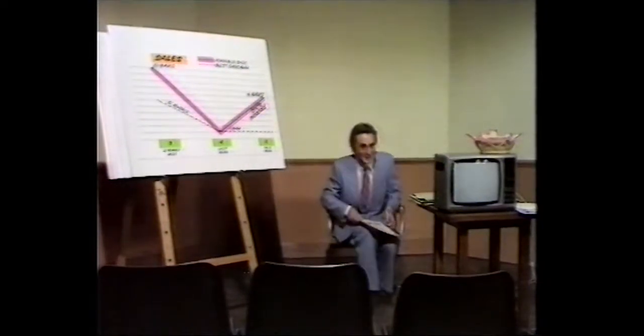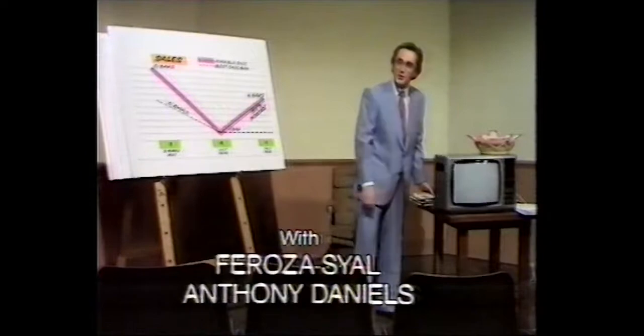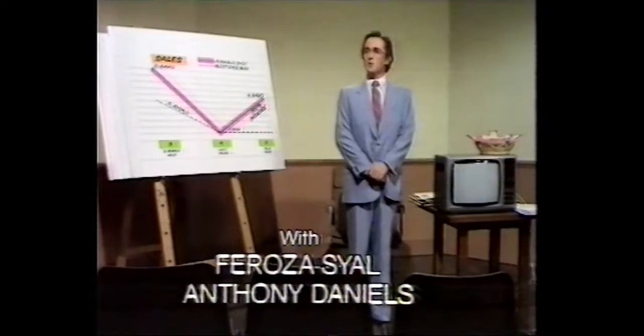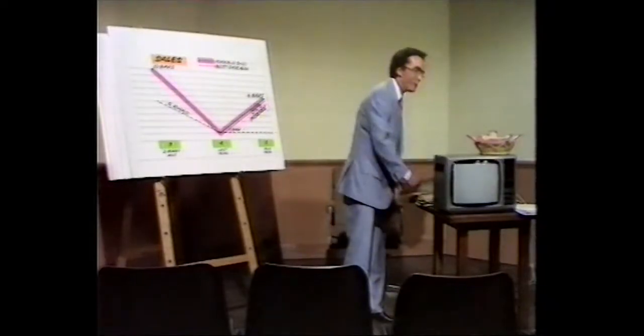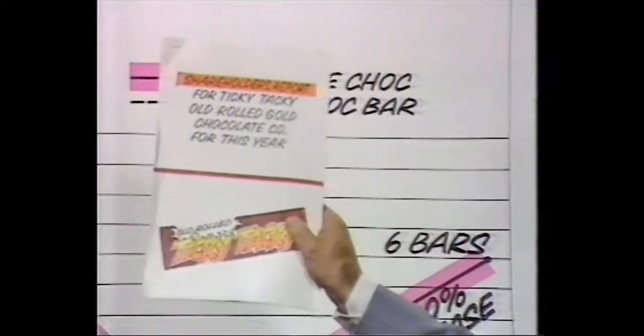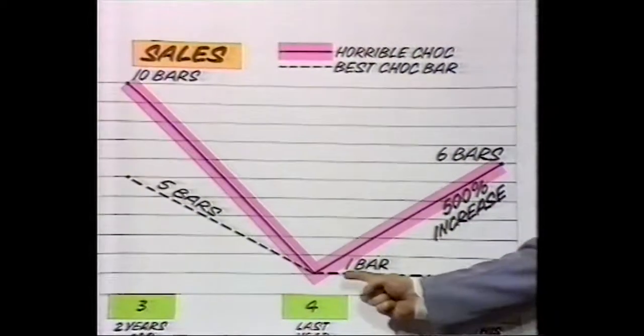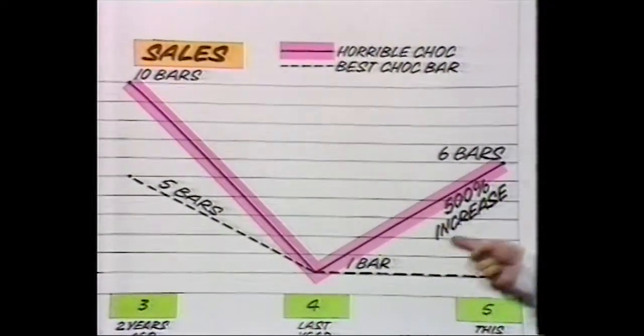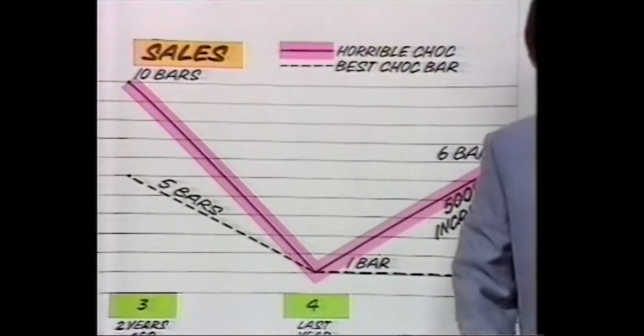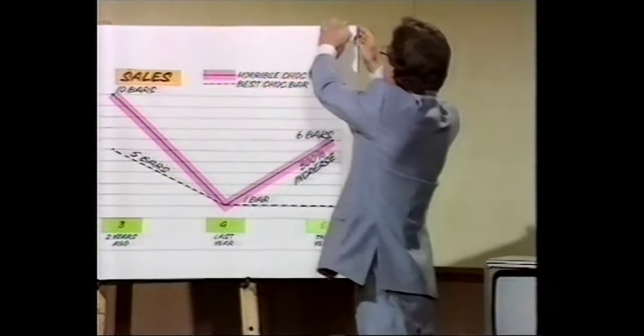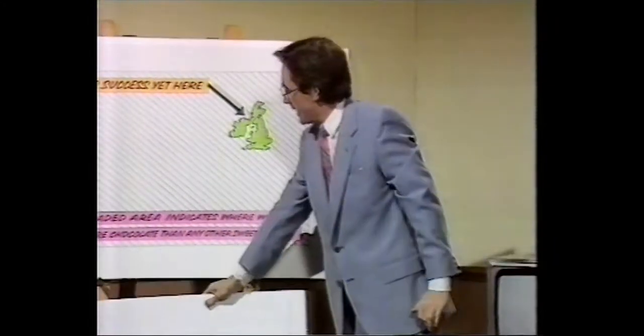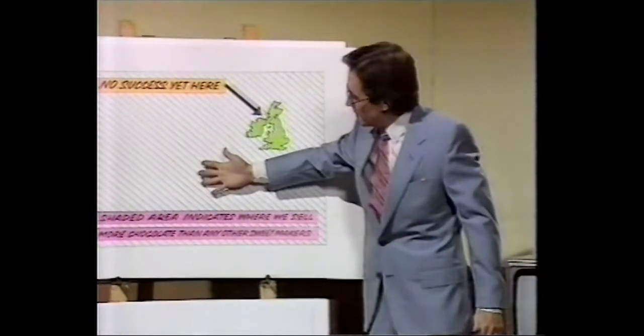Good morning ladies and gentlemen, thank you for coming to the fifth annual shareholders meeting of the Ticky Tacky Old Rolled Gold Chocolate Company. I hope you've all had a copy of our prospectus showing how well we've done over the last year. First, sales — we have increased our sales over last year by 500 percent! It must be said that profits from last year were down five percent, but during this year we climbed right back up by five percent, which brought us level again.